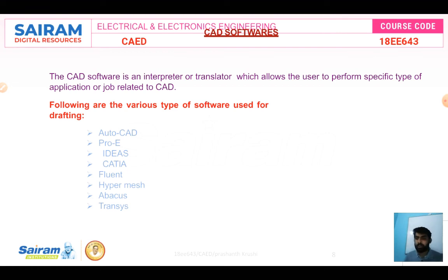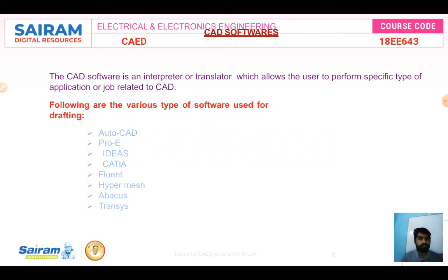The following are various types of CAD software used for drafting: one is AutoCAD, which we are using at present in our college — AutoCAD 2017. Pro-E is also software for designing and drawing. CATIA is used for mechanical engineering students, and Fluent and HyperMesh are also used in mechanical engineering.